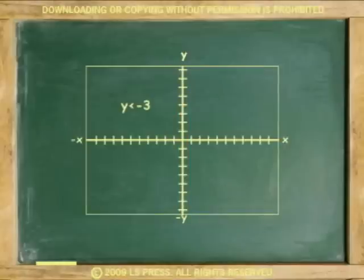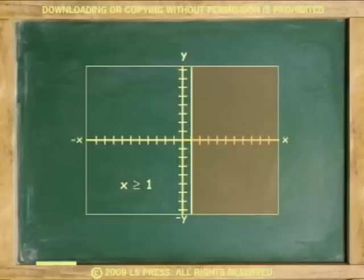Another example, graph the inequality y is less than negative 3. Again, graphed in two dimensions, an inequality with only one variable is either vertical, x only, or horizontal, y only.